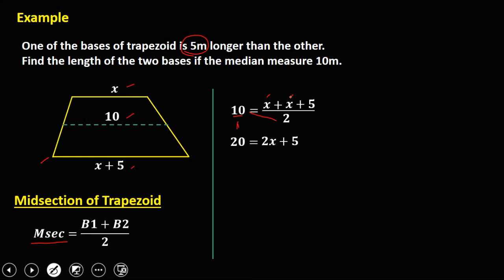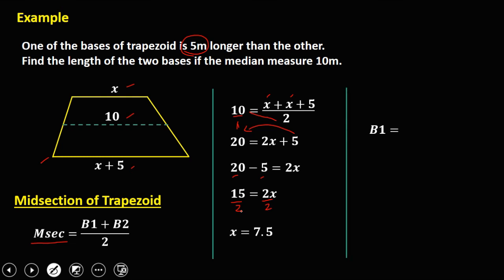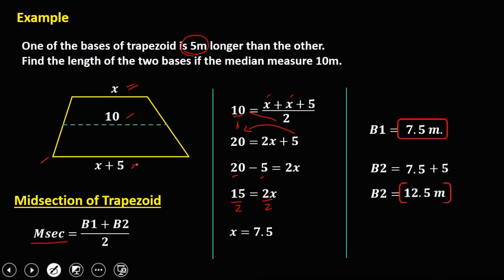Transposing 5 to the left: 20 minus 5 = 15 = 2x. Dividing both sides by 2, x = 7.5. Therefore, base one equals x = 7.5 meters, and base two equals x + 5 = 7.5 + 5 = 12.5 meters. These are the lengths of the two bases of this trapezoid.